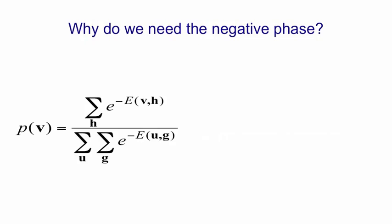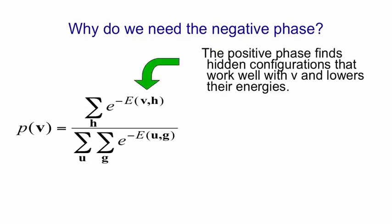The equation for the probability of a visible vector is that it's the sum over all hidden vectors of e to the minus the energy of that visible and hidden vector together, normalized by the same quantity summed over all visible vectors. So if you look at the top term, what the first term in the learning rule is doing is decreasing the energy of terms in that sum that are already large. And it finds those terms by settling to thermal equilibrium with the vector v clamped so that it can find an h that goes nicely with v, that is, gives a nice low energy with v. Having sampled those vectors h, it then changes the weights to make that energy even lower.